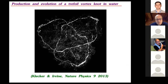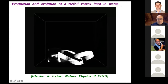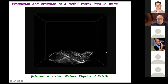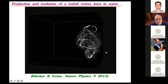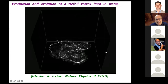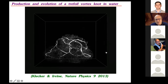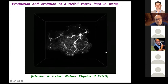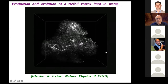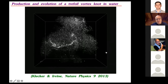I am also pleased to show the movie of the experiment done by the group of William Irvine in Chicago about the production of a trefoil knot in water and its further evolution. An airfoil made in the shape of a trefoil knot produces a vortex filament in the shape of a trefoil knot. Following its evolution, the filament strands reconnect and form other structures — shown to be a Hopf link — then further reconnections down to two separate rings, and then full dissipation.